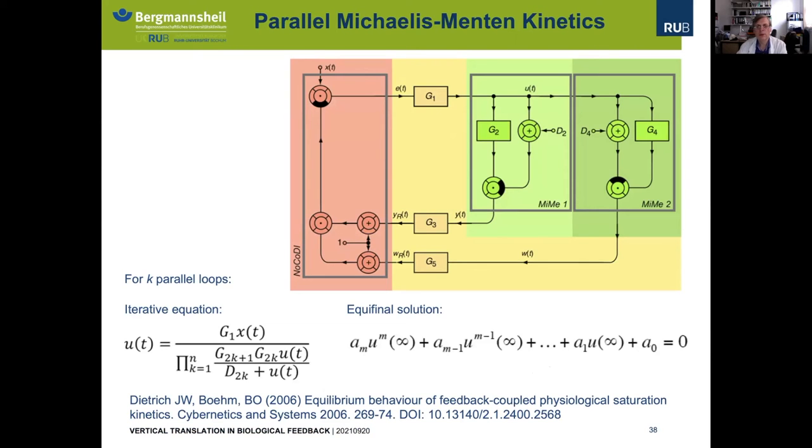It is a bit more complicated for parallel MIME kinetics. We arrive at an equation in the iterative case which contains multiple factors accounting for the Michaelis-Menten kinetics in the denominator. This can be solved as an algebraic equation of grade m, where m is k+1, for k being the number of parallel loops. So in theory, we have a model which now accounts for physiological principles, which is a nonlinear model, and it is possible to find the behavior of the feedback loop also from this nonlinear model.